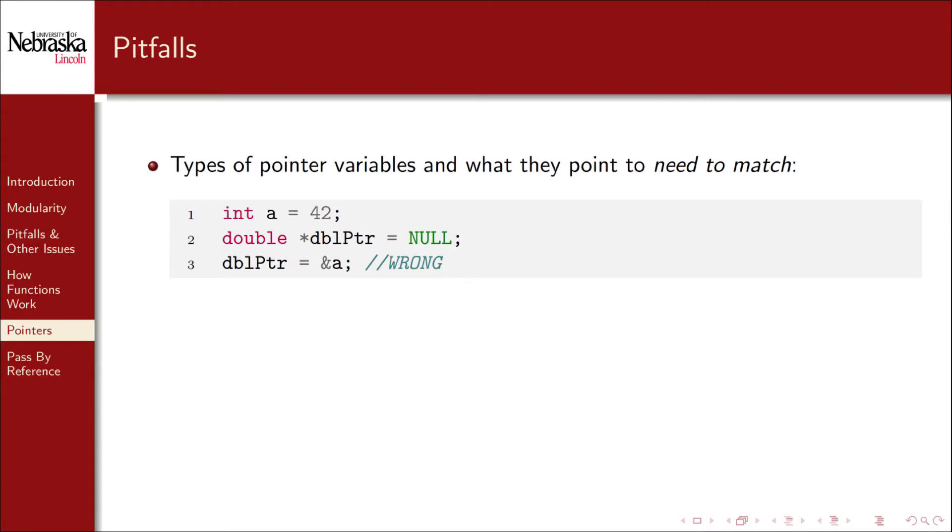There are many pitfalls to avoid when working with pointers. The first is that a pointer variable and the thing that it points to need to have the same types. An integer pointer can only point to an integer and a double pointer can only point to a double. If you mix them up bad things happen.